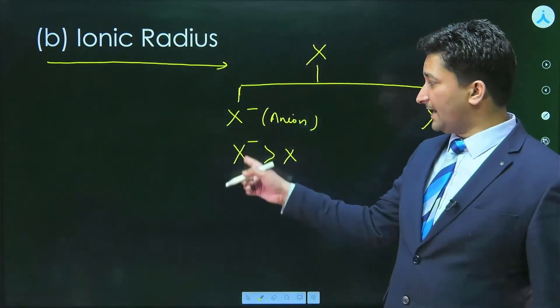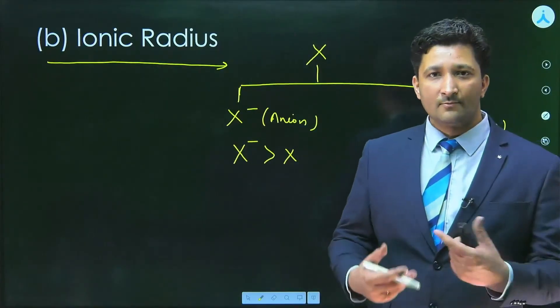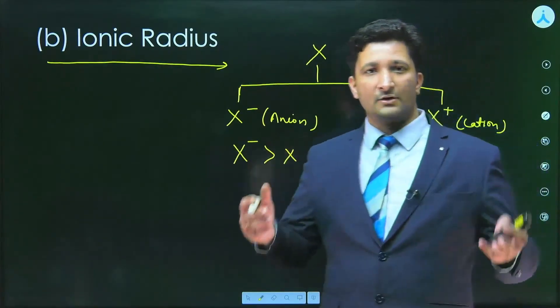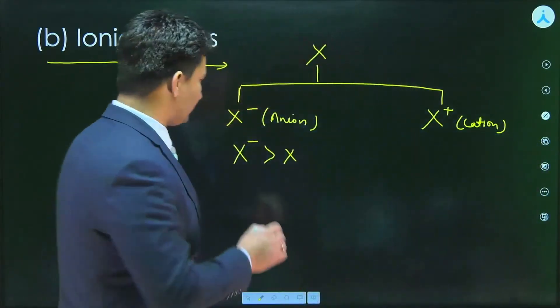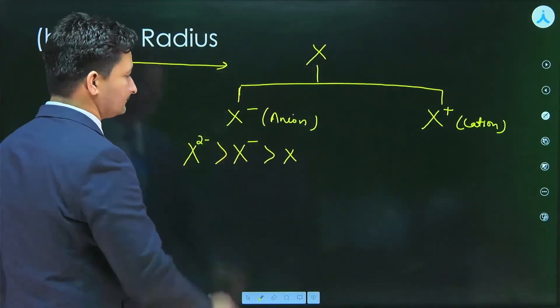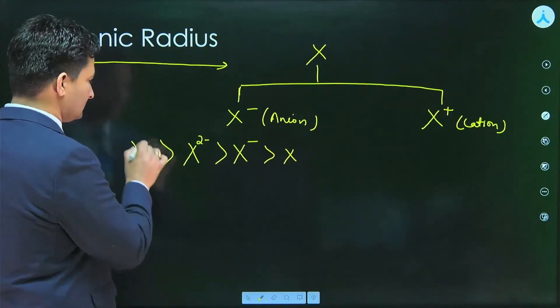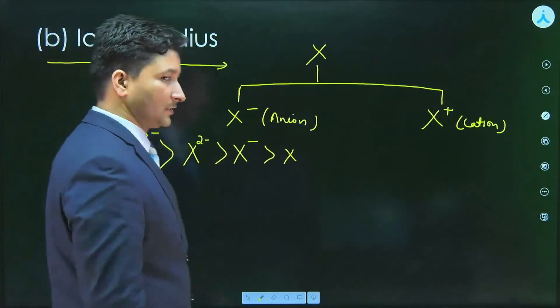Suppose this element X minus gains some more electrons. One more electron is added to it. More electron-electron repulsion will be there, so definitely size will increase.